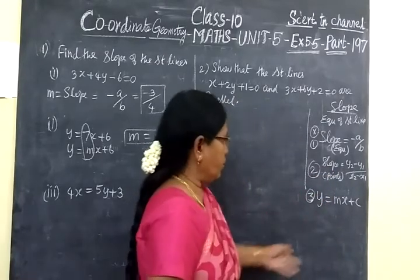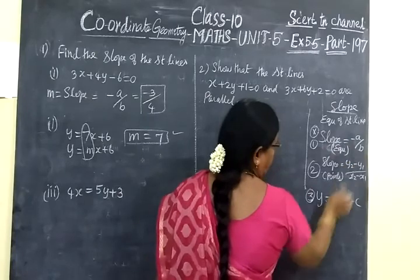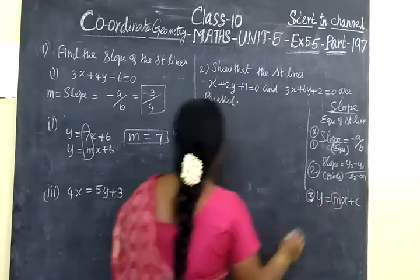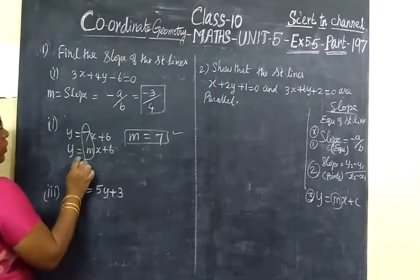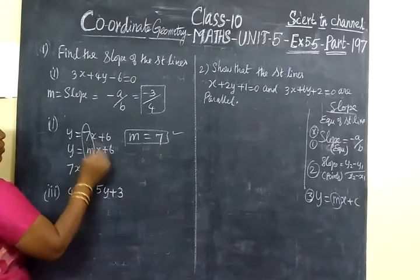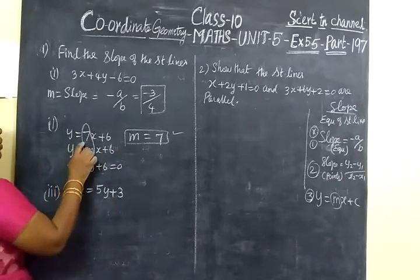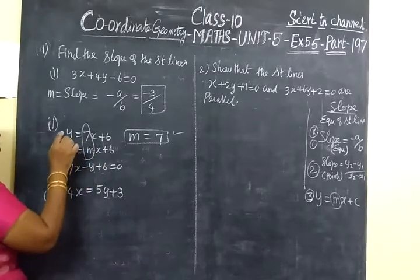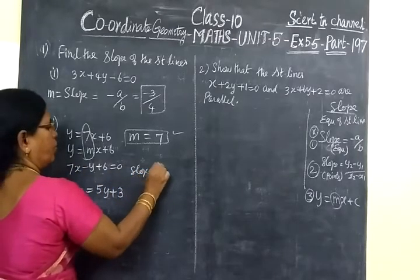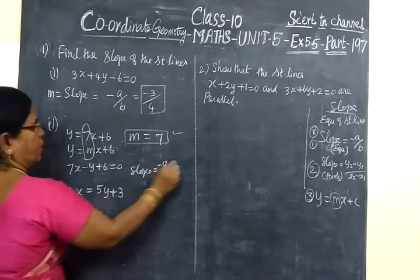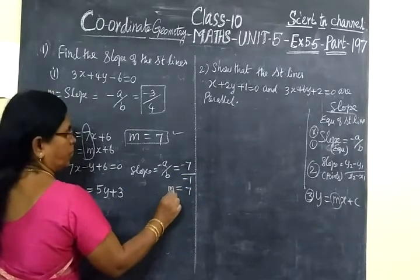The equation of straight line m can be directly found. M is given minus a by b. If m is given, this is m. Compare, if you compare, m equals 7. Suppose if you want to use this formula, you write in the standard form: 7x minus y plus 6 equals 0. After arranging the slope formula, slope equals formula minus a by b equals minus 7 by minus 1. So minus minus cancel. So slope equals 7.